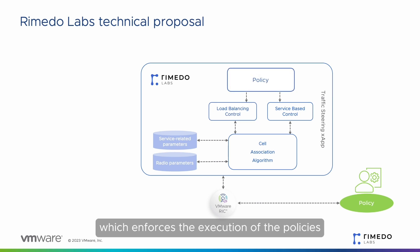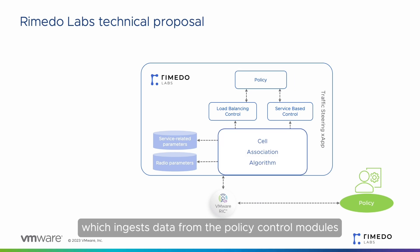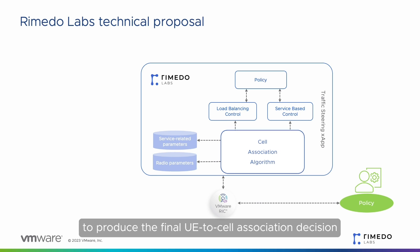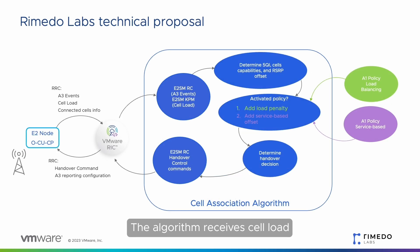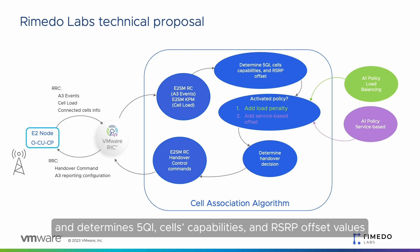The policy module enforces the execution of the policies. And finally, the cell association algorithm module ingests data from the policy control modules and the network to produce the final UE-to-cell association decision. The algorithm receives cell load and RRC A3 events information via VMware Distributed RIC's E2 layer and determines 5QI, cell capabilities, and RSRP offset values.